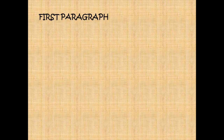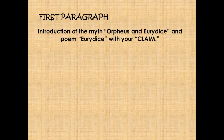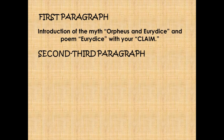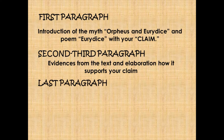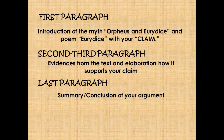Now, how will you construct your argument? Let us go over the paragraph structure. Your first paragraph must contain an introduction of the myth Orpheus and Eurydice and the poem Eurydice, along with your claim. The second or third paragraph should contain evidence from the text and elaboration on how it supports your claim. And the last part is the summary or conclusion of your argument, where you sum up your ideas.